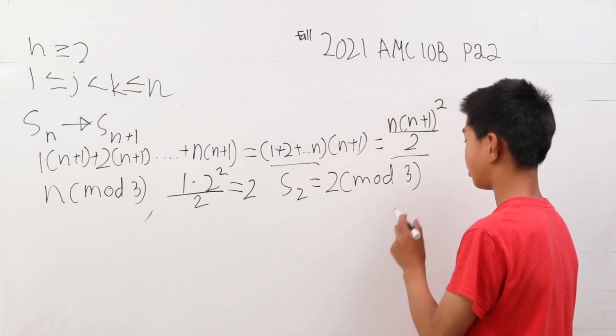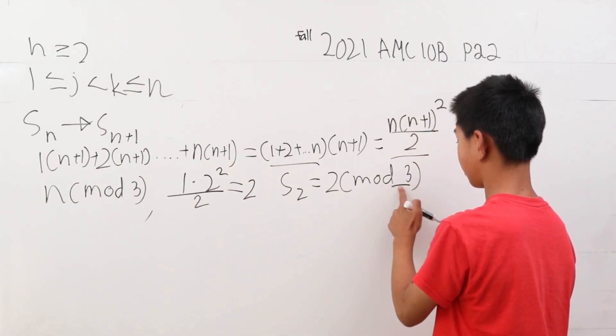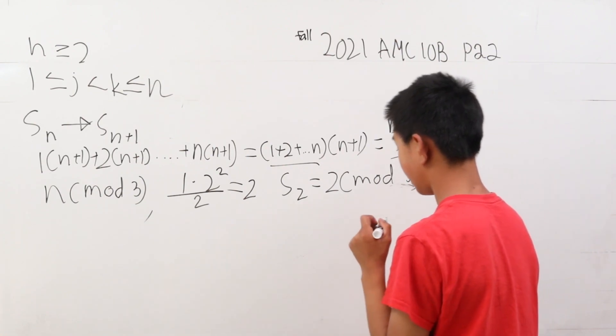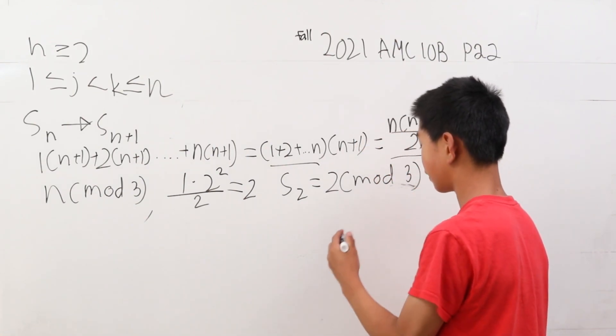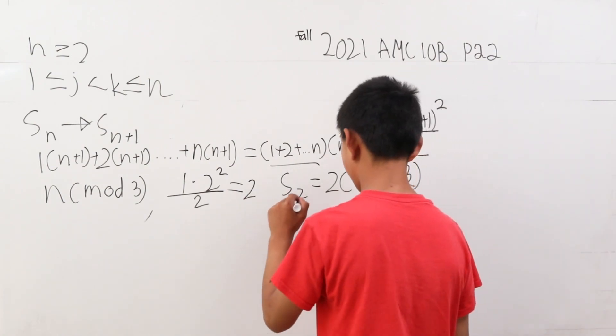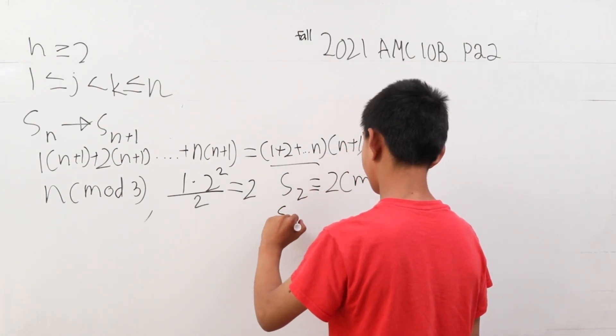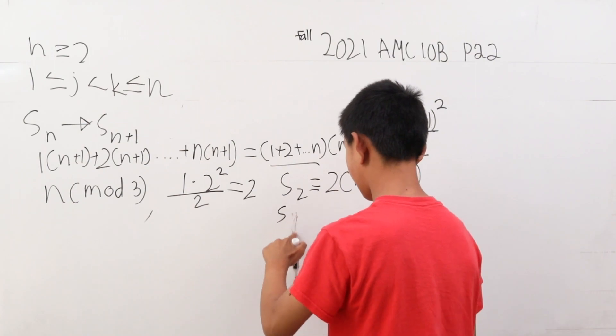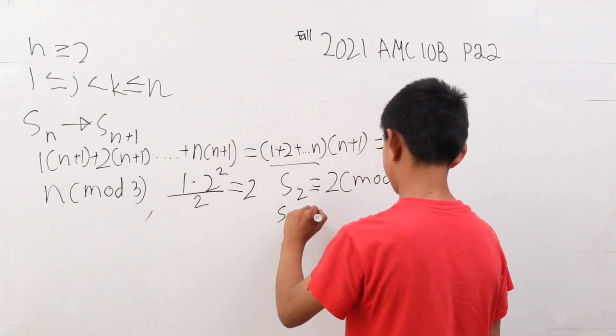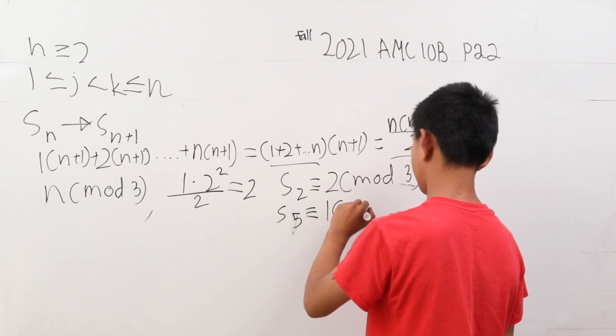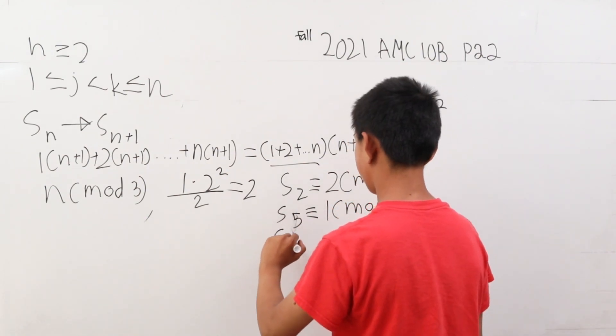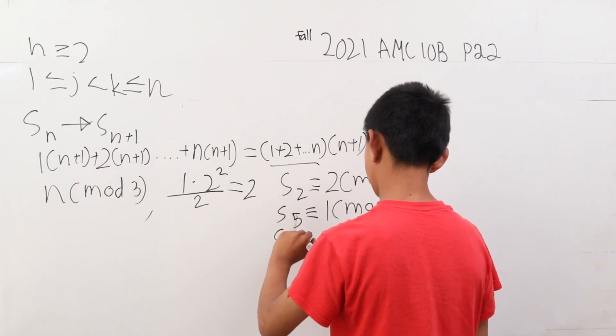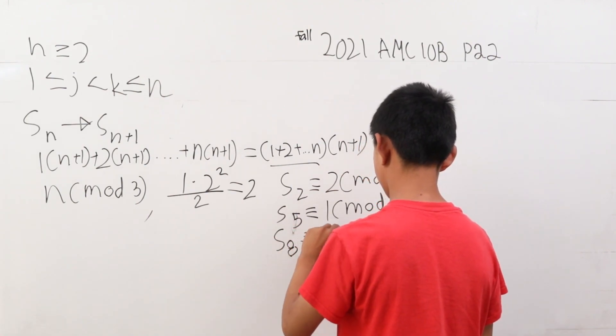Since this is a 3 formula, it changes by 2 every 3 terms. So likewise, s of 5 is going to be 1 mod 3, and s of 8 is going to be 0 mod 3.